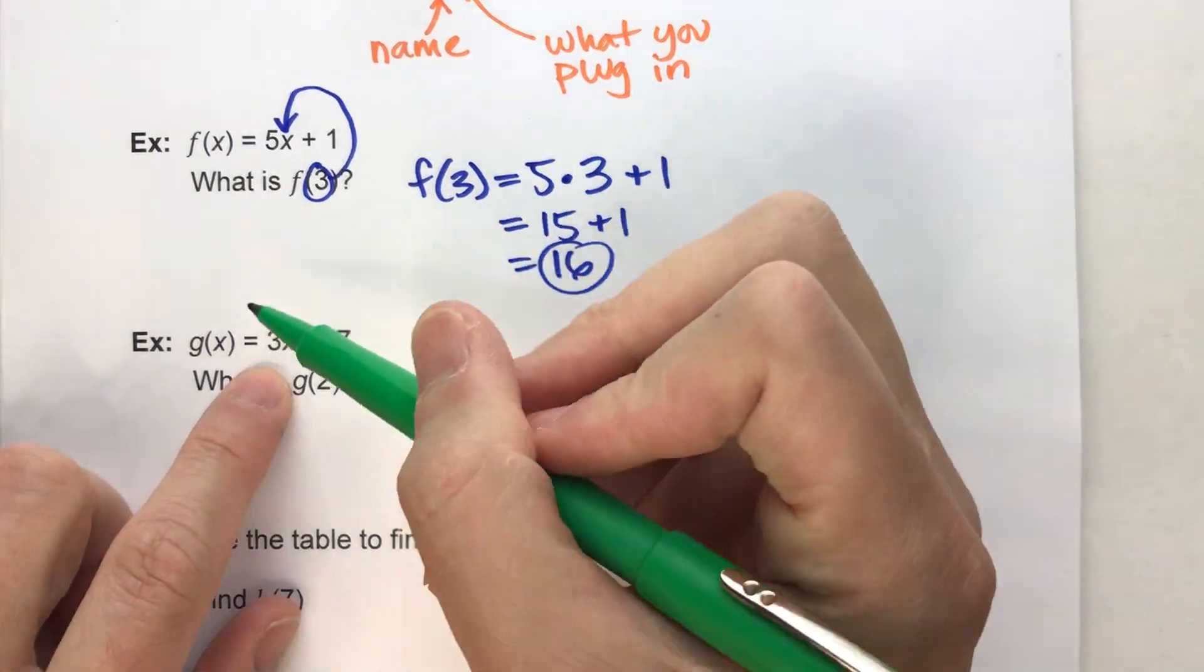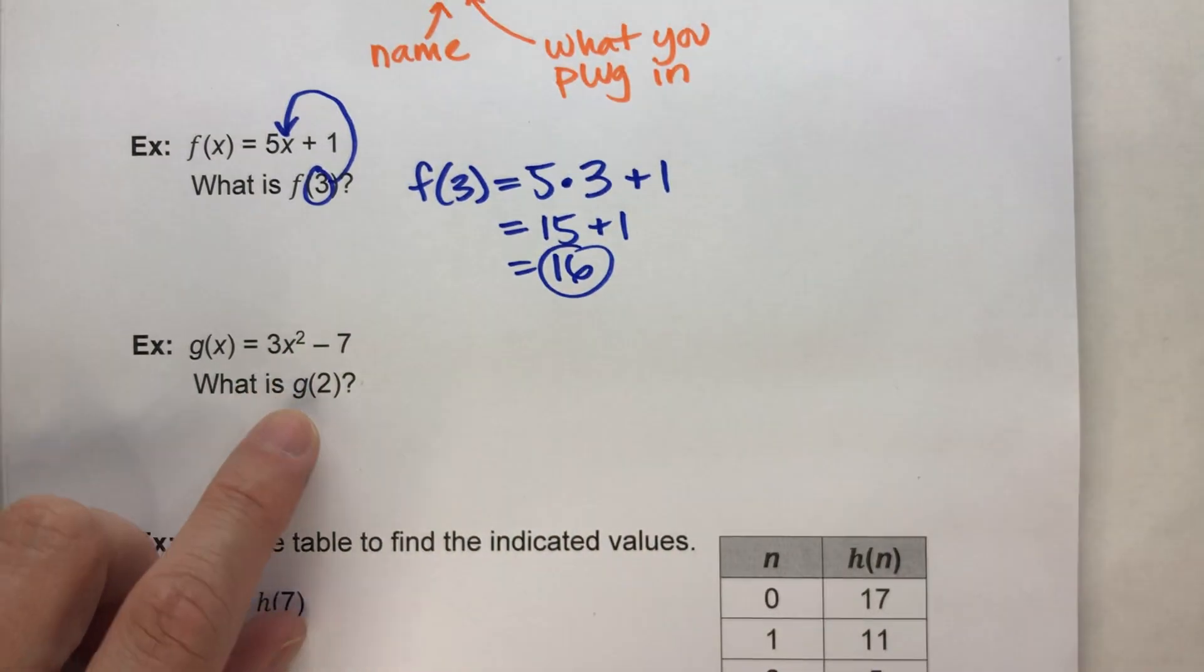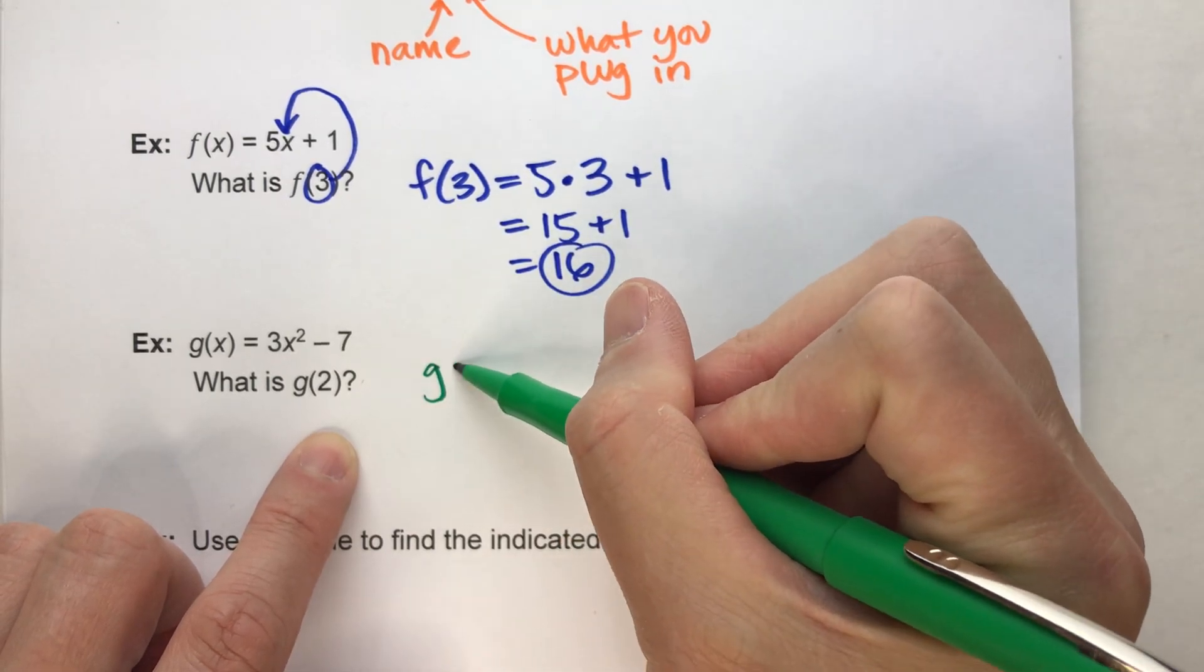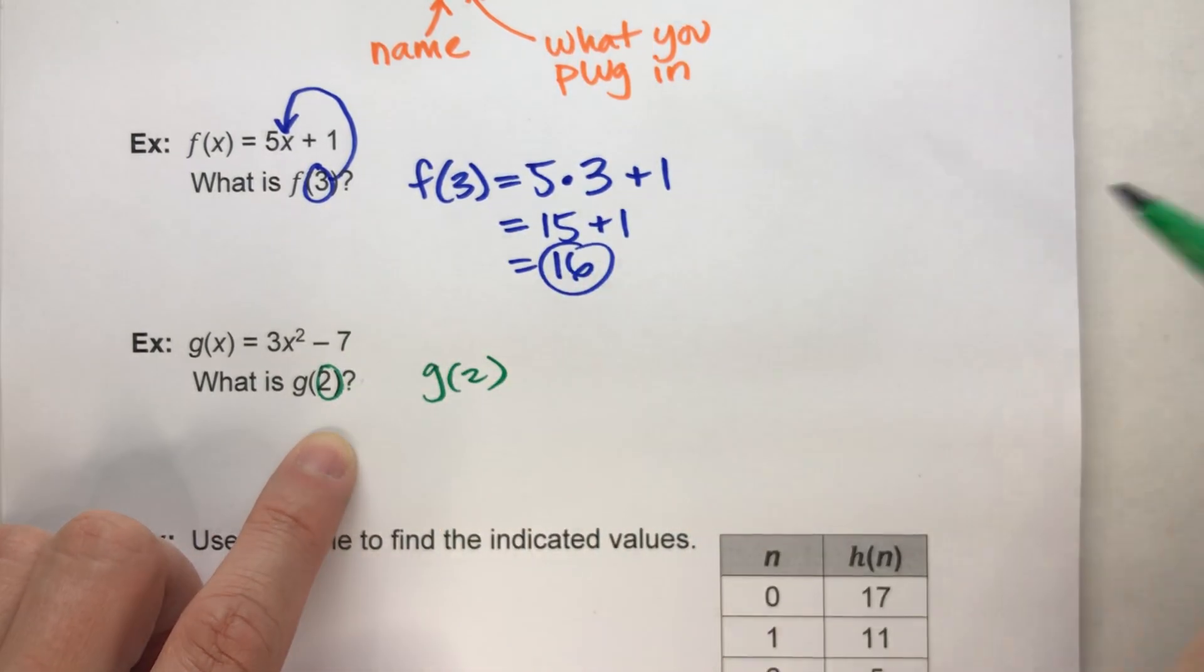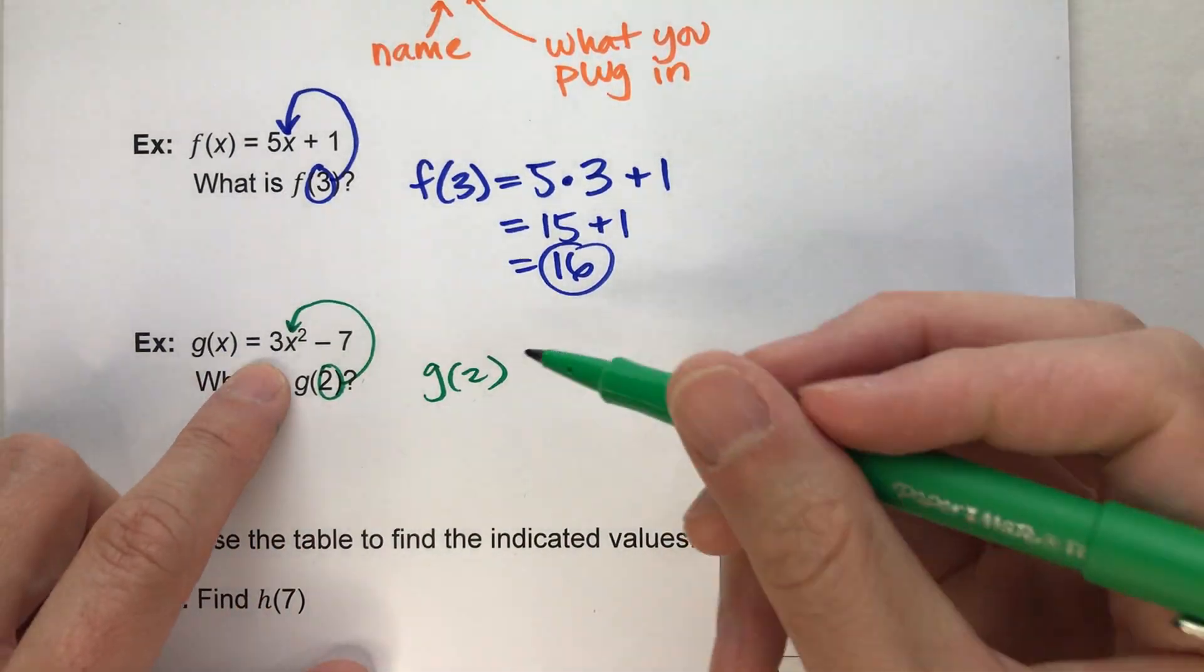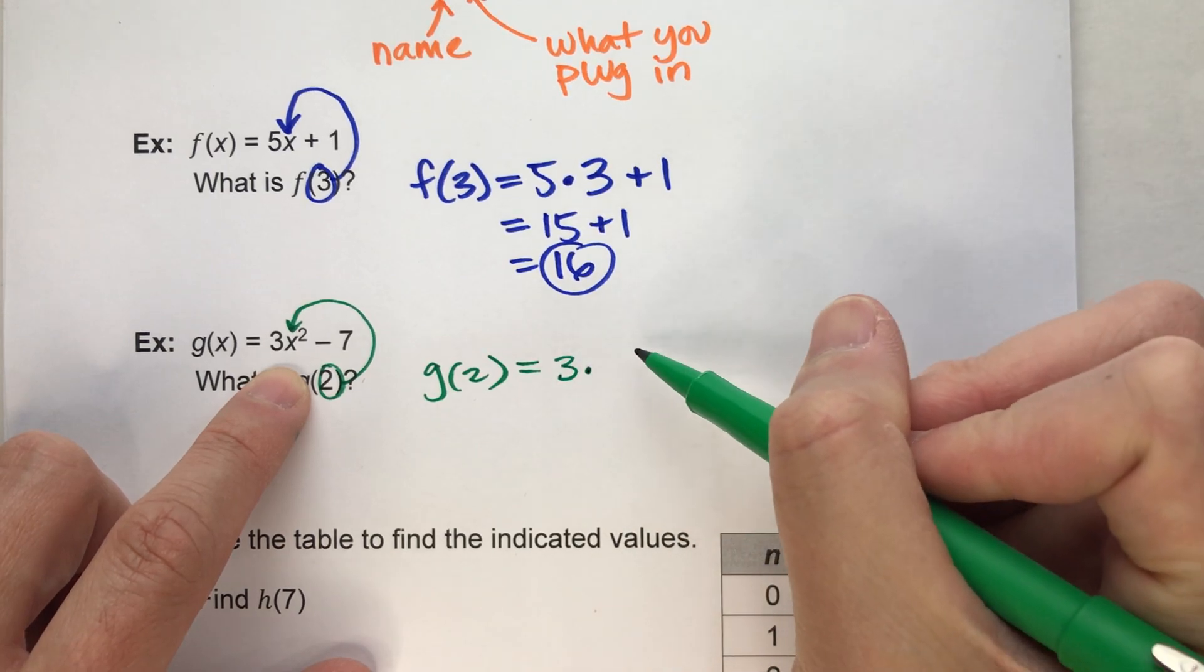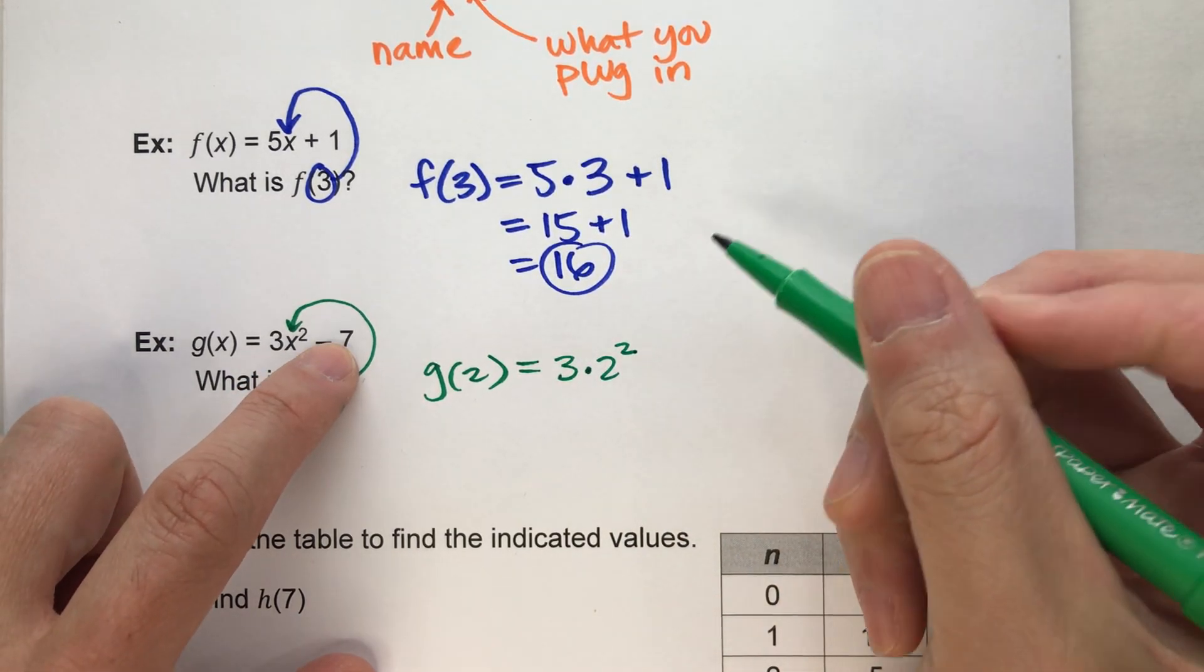But, again, we just apply something to x to get an answer. And in this case, we want to know what g of 2 is. So we're going to put 2 into our rule instead of x. So instead of 3 times x squared, we're going to do 3 times 2 squared minus 7.